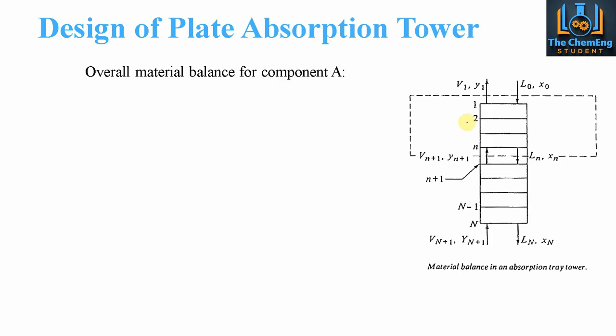Now it's based on a general schematic that looks like this. So if we consider the overall component balance for A, then what we have here is if we look at these four streams. So we have this stream here, this one, here and here.